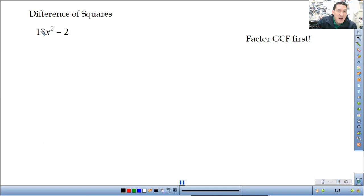Difference of squares here. Factor greatest common factor first. So, 18x squared and 2, I can factor out a 2. And then, I'd be left with 9x squared minus 1.